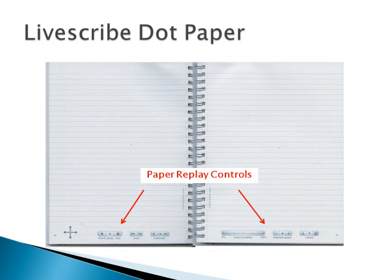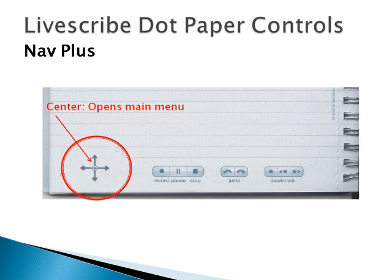Using the dot paper is as simple as writing on regular paper. However, the dot paper has special controls located at the bottom of each page that control pen functions. Starting in the left corner of the left page is the main menu navigation arrows. When you tap where the arrows cross, the main menu opens.